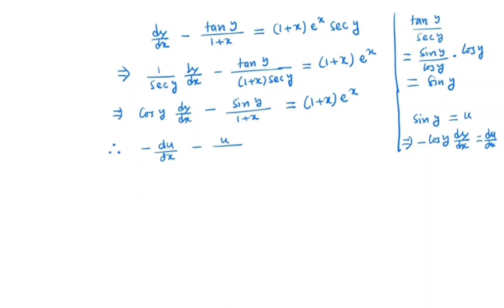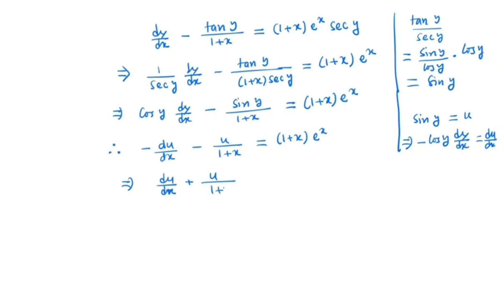Substituting, we get minus du/dx minus u/(1+x) equals (1+x) e^x. If we simplify this equation, we get du/dx plus u/(1+x) equals (1+x) e^x.